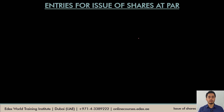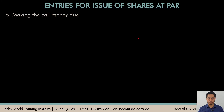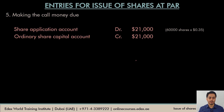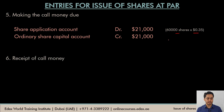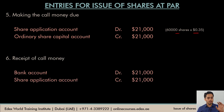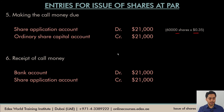The company will then make the call money due: the share application account is debited and the ordinary share capital account is credited. There is no premium in the call money, so the entire amount is face value — 60,000 × $0.35 goes to the share capital account. When the company receives the call money, bank account is debited and the share application account is credited. This completes the journal entries for the second example.